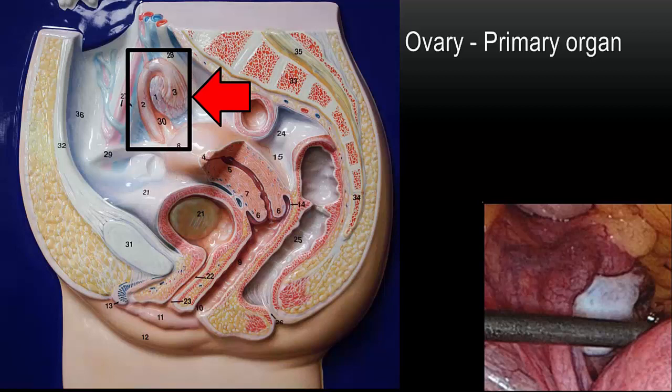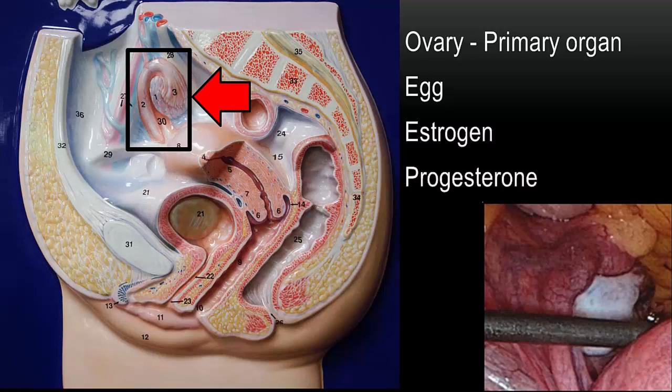The ovary is the primary organ of the female reproductive system. It produces the egg and also the hormones estrogen and progesterone.